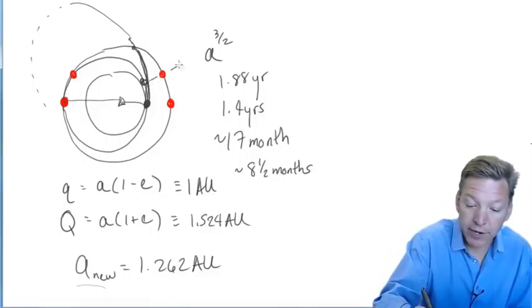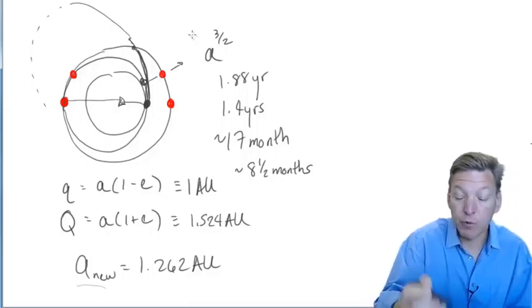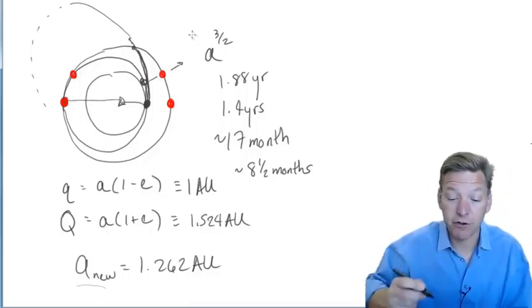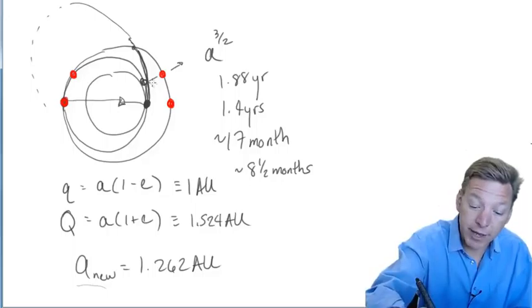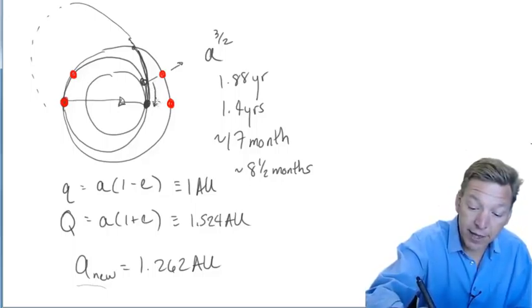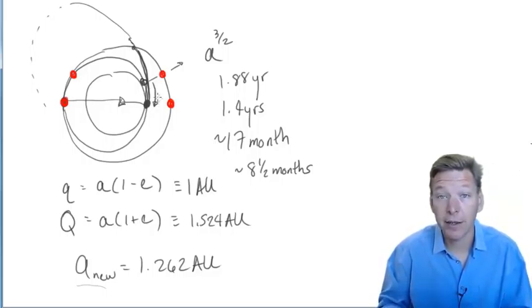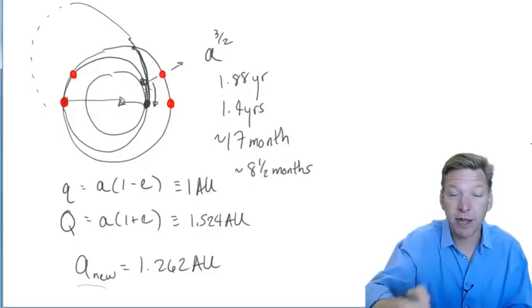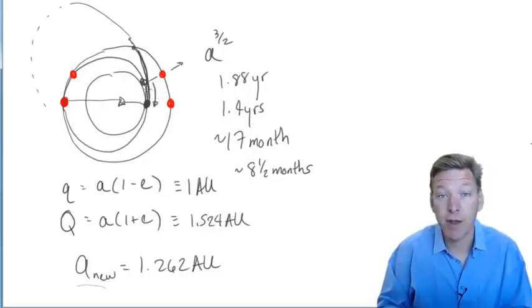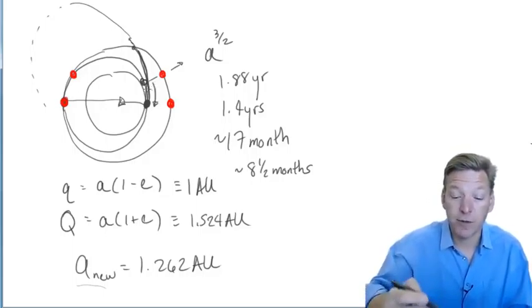Mars is straight overhead at midnight, which means this would not be a good time to launch a spacecraft towards Mars. But a good time would have been just a few months ago. And in fact, the Mars Maven spacecraft, which is going to study the upper atmosphere of Mars, we'll talk a lot about that in a few lectures.